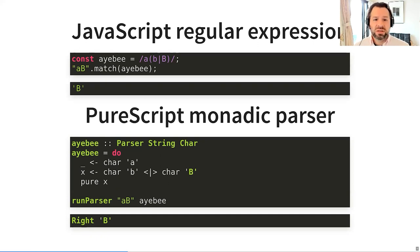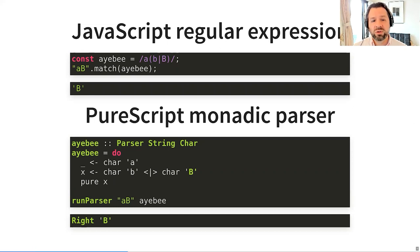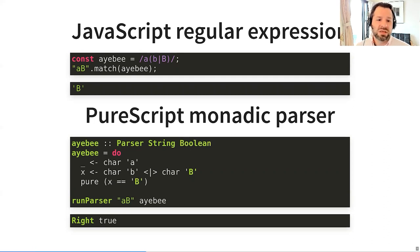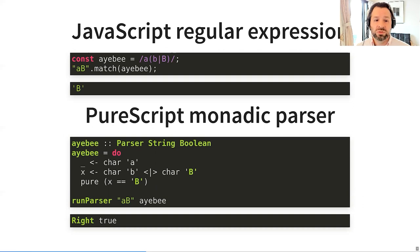Now let's modify this parser so that instead of returning the captured 'b' character, it returns a data structure — specifically, a single bit. The single bit contains all the information we need about whether the 'b' was uppercase or lowercase. We've changed the type of the parser to return a Boolean instead of a Char. The parser returns true if the parse succeeded and the 'b' was uppercase. This is an example of what we mean when we say we want typed data structures which make illegal states unrepresentable. There are only two possible ways to successfully parse this string, and the data structure has exactly two possible values — no more.